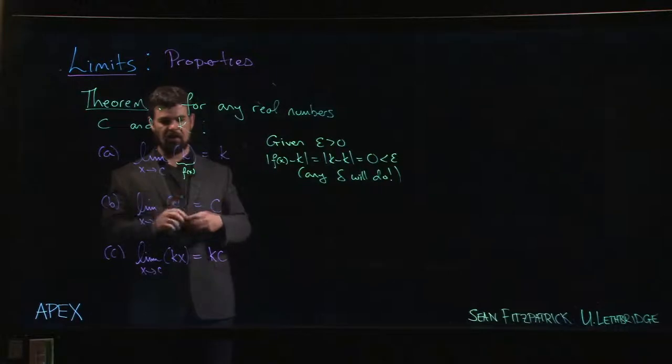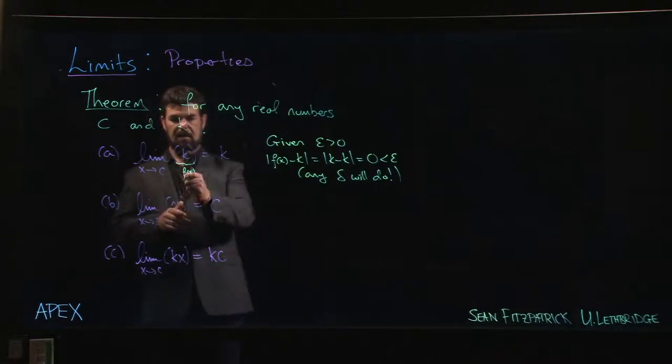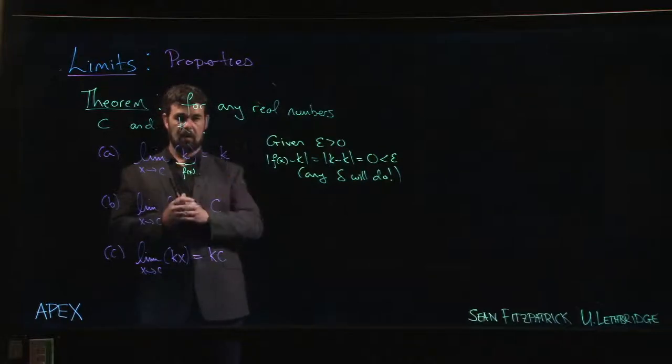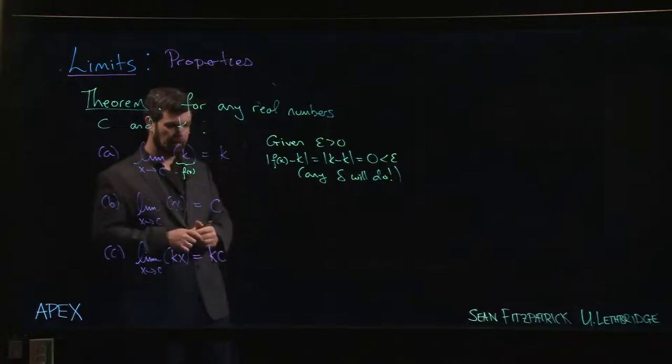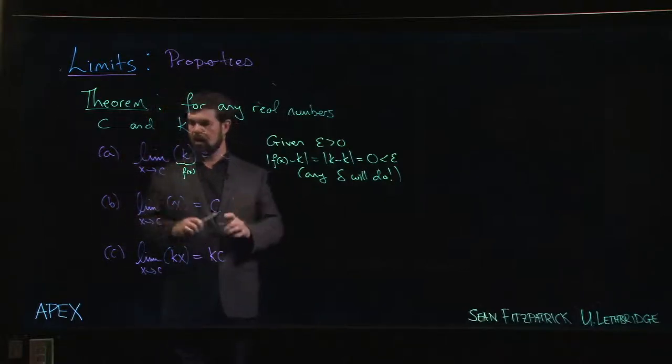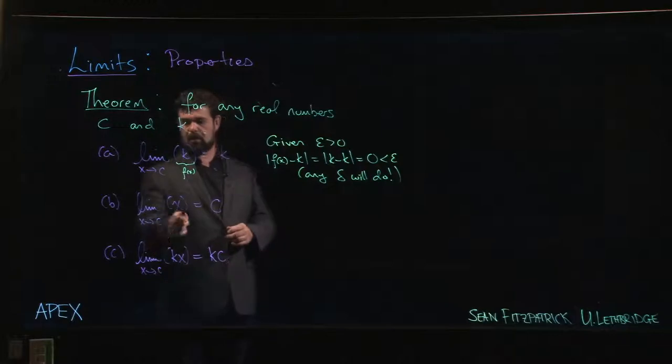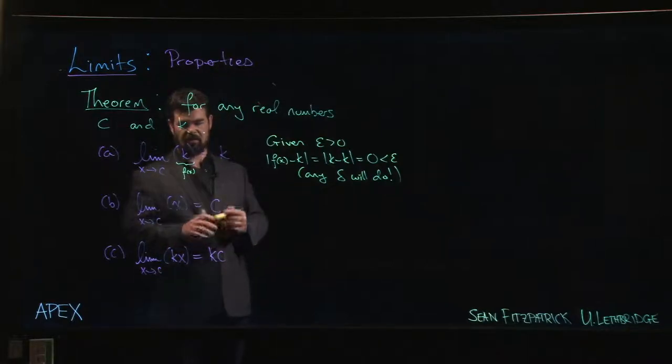Some people may want to distinguish here between the fact that this k we're thinking of as a constant function, whereas over here we're just thinking of it as a value, as a real number. Generally we don't really worry too much about making this distinction. Now the next one, we just have the identity function, so f of x equals x.